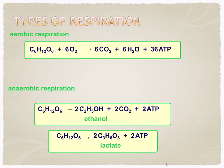In aerobic respiration, a respiratory substrate, usually glucose, is split in the presence of oxygen to release carbon dioxide and water, and a large number of ATP molecules are produced. In anaerobic respiration, no oxygen is used; glucose is converted to either ethanol and carbon dioxide, or lactate, and only a small number of ATP are yielded.